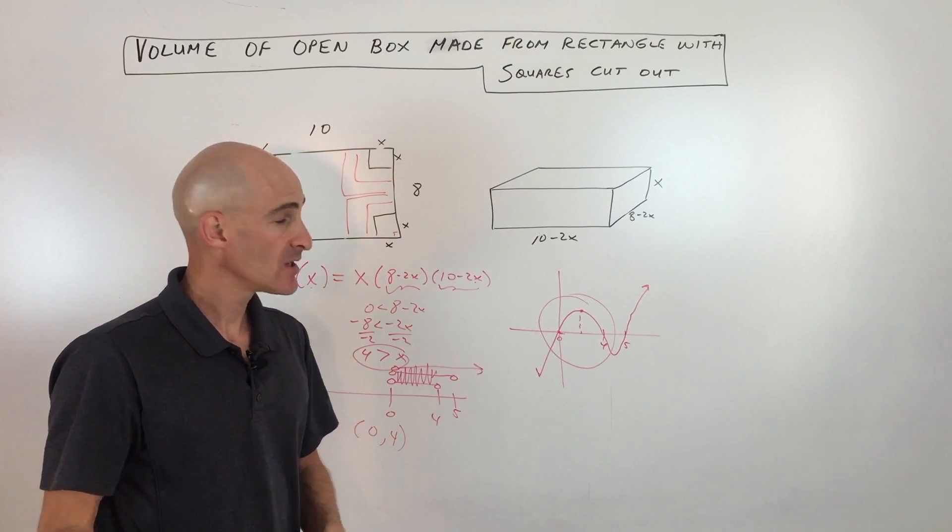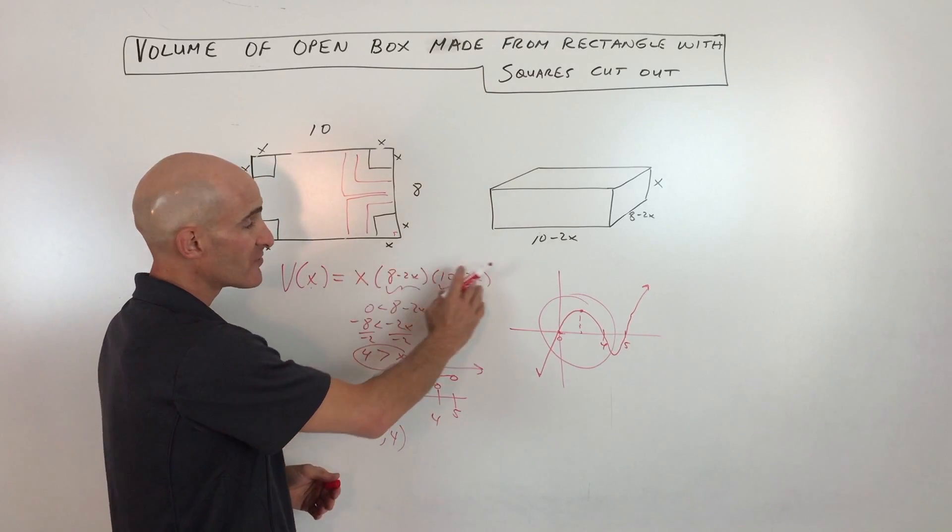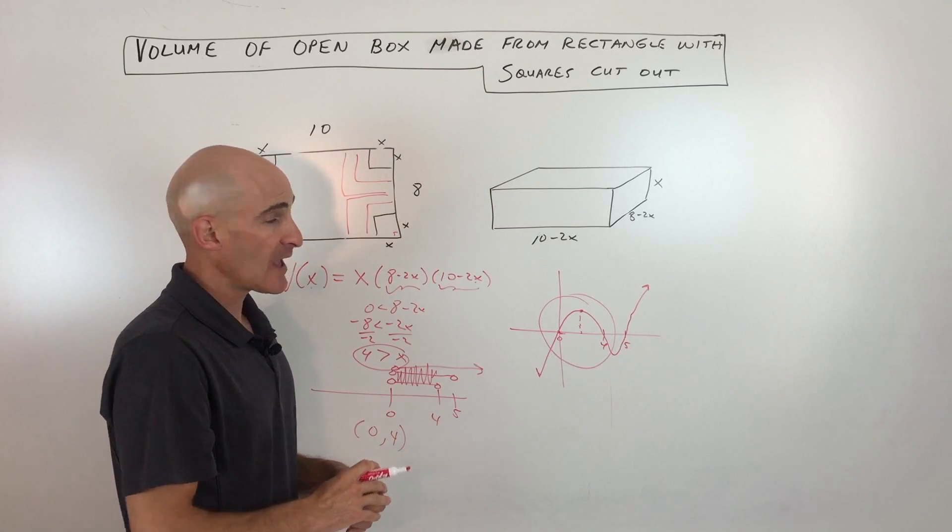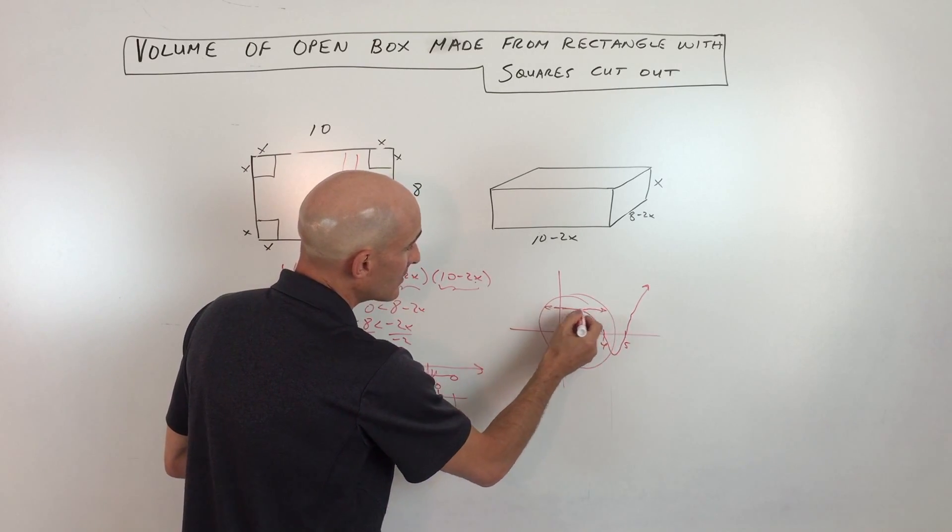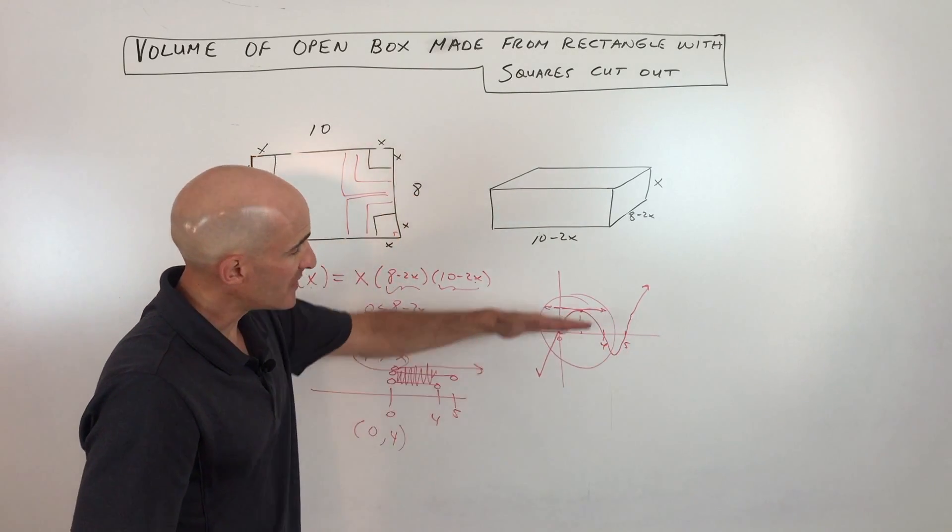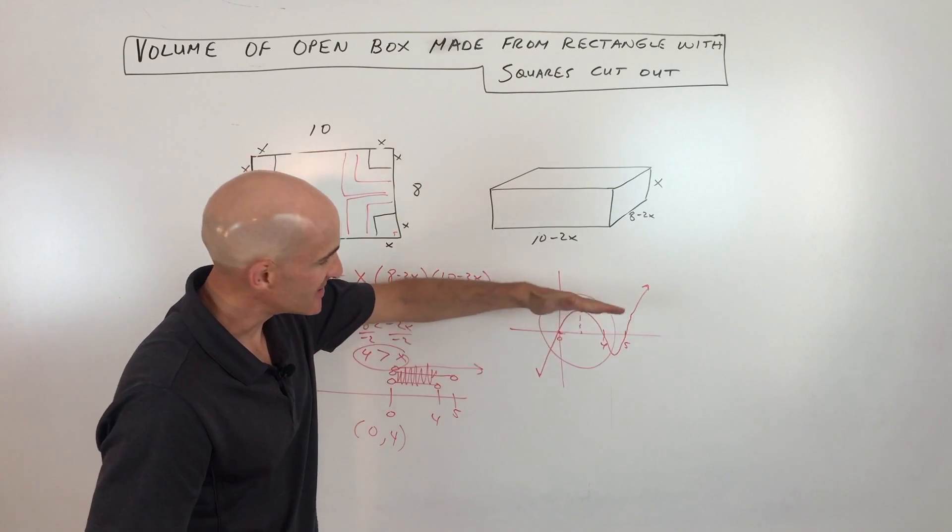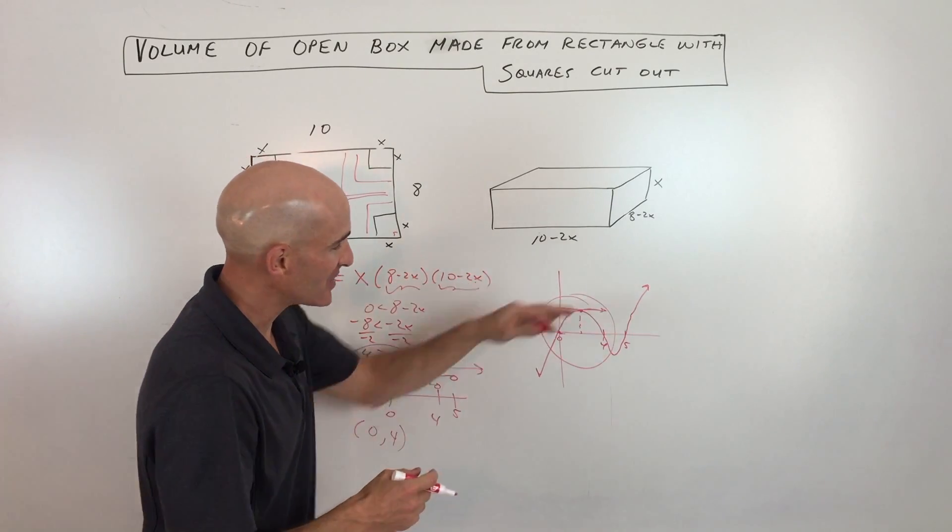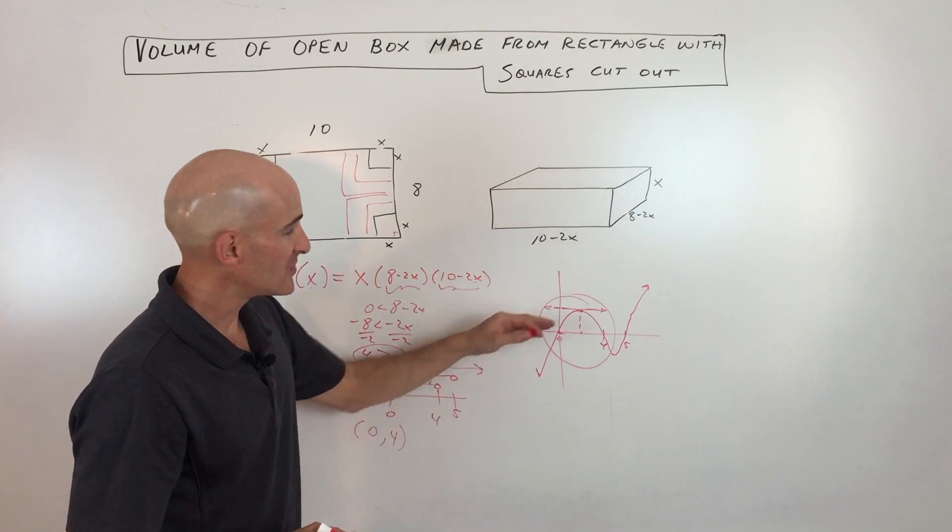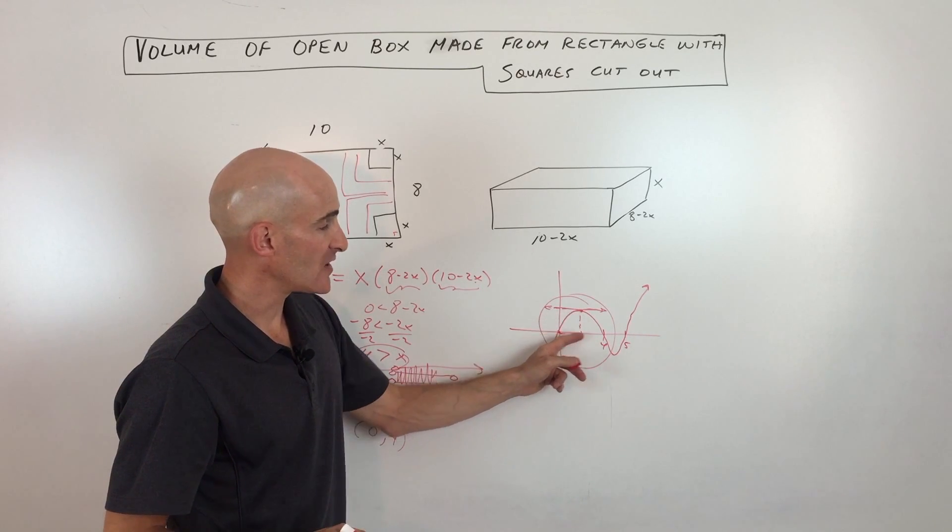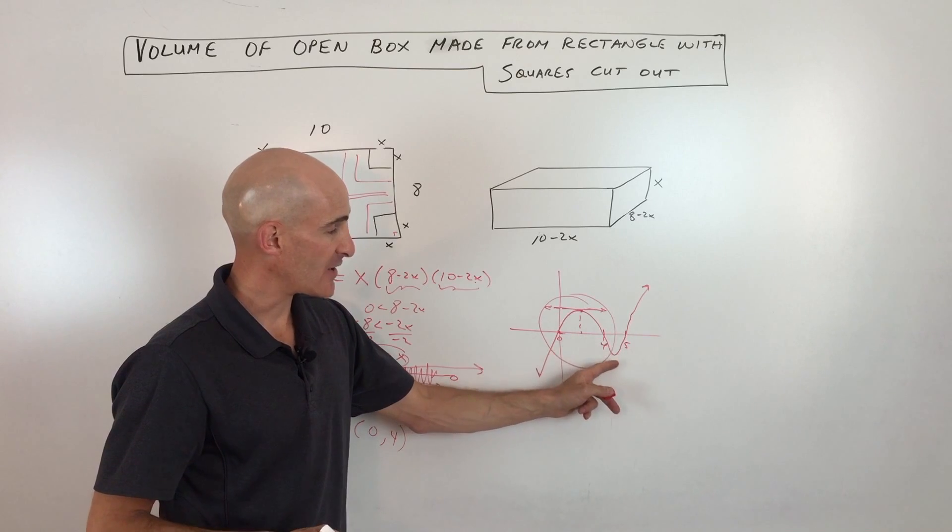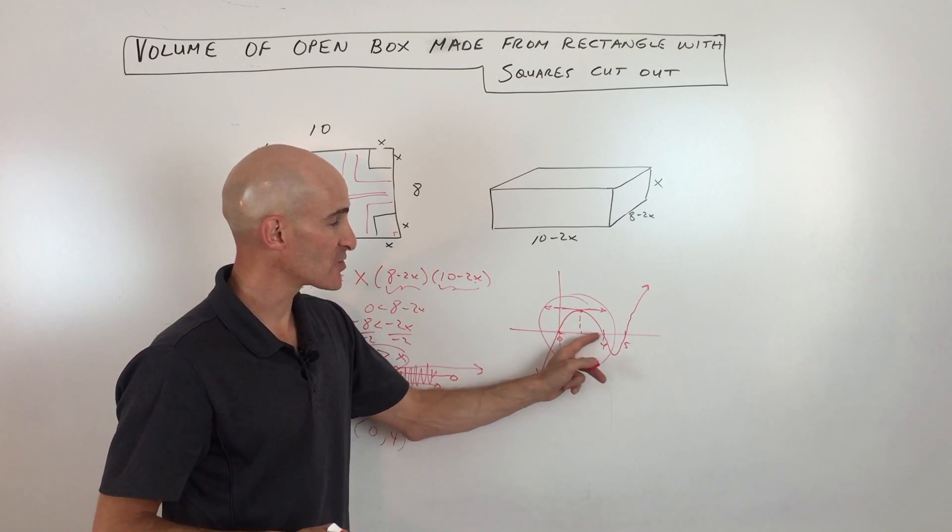Now if you're in calculus, what you can do is you can take the derivative of this quantity and set the derivative equal to 0. Because when the derivative is equal to 0, what you're doing is you're finding where the instantaneous rate of change is equal to 0, where it's a horizontal line. So if you take the derivative and set it equal to 0, you can find out where this x value lies in between 0 and 4. You're not interested in the one that's between 4 and 5, just the restricted domain here.